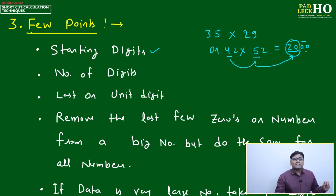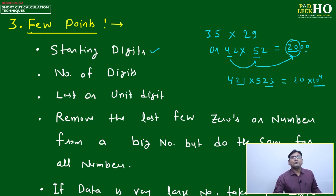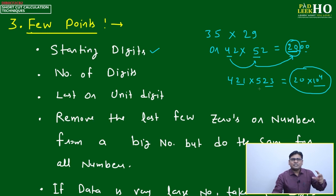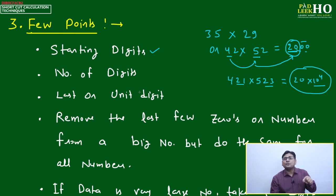The number of digits is also very important. For 42 × 52, there are two digits in each number, so the result is approximately 20 × 10² = 2000. If you extend one number to three digits, you'd write 20 × 10⁴ instead, changing the magnitude. Observation is the key to learning — based on observation, for 400 × 500, it becomes 20 × 10⁴, and for 421 × 523, it's still approximately 20 × 10⁴.